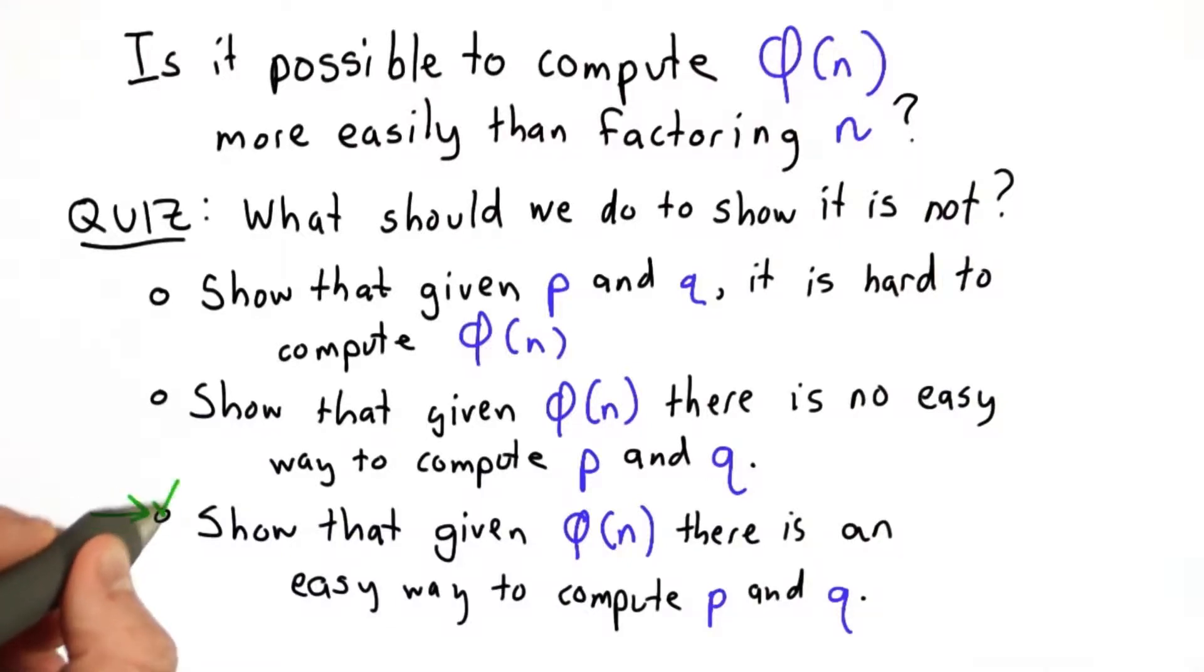The answer is that we want to do the third thing. We want to show some way that if we had the totient of n, we could also factor n. That would show that finding the totient is no easier than finding the factors.